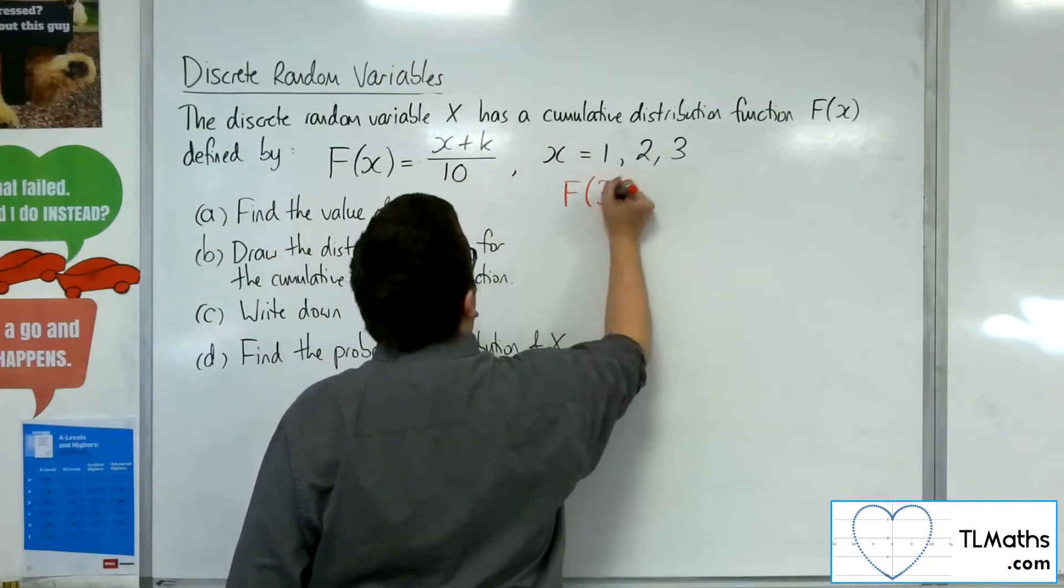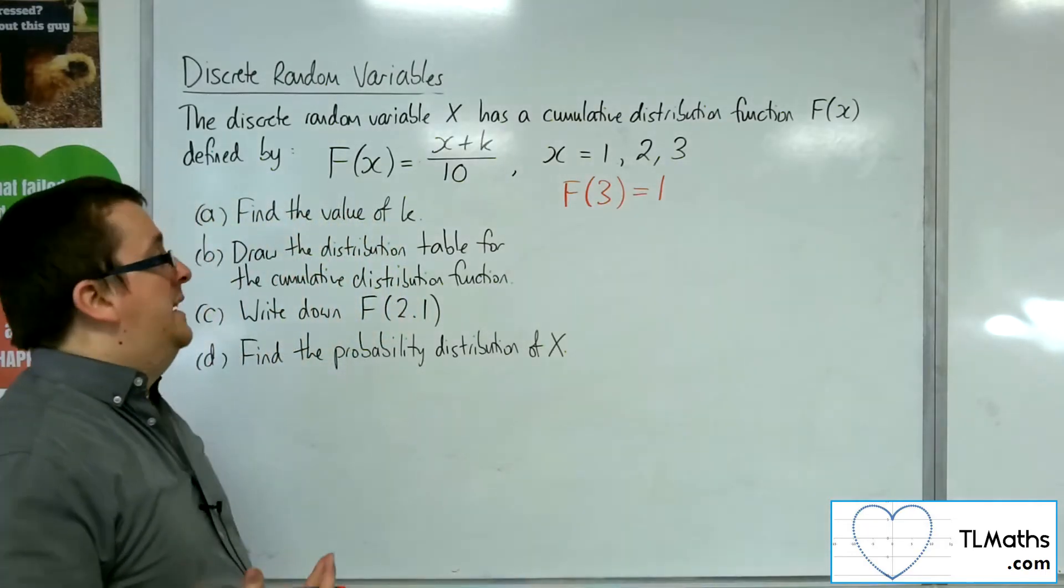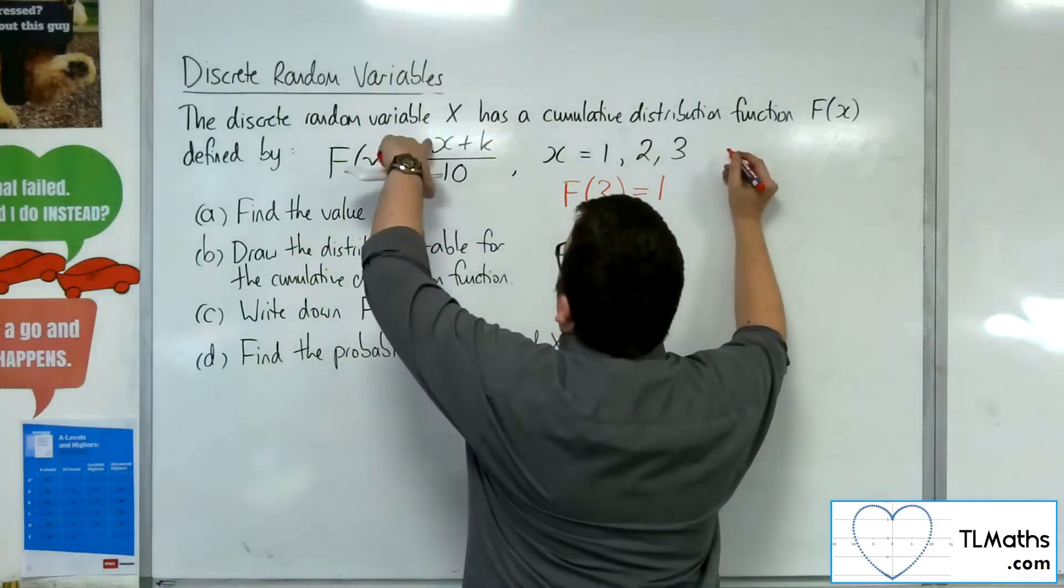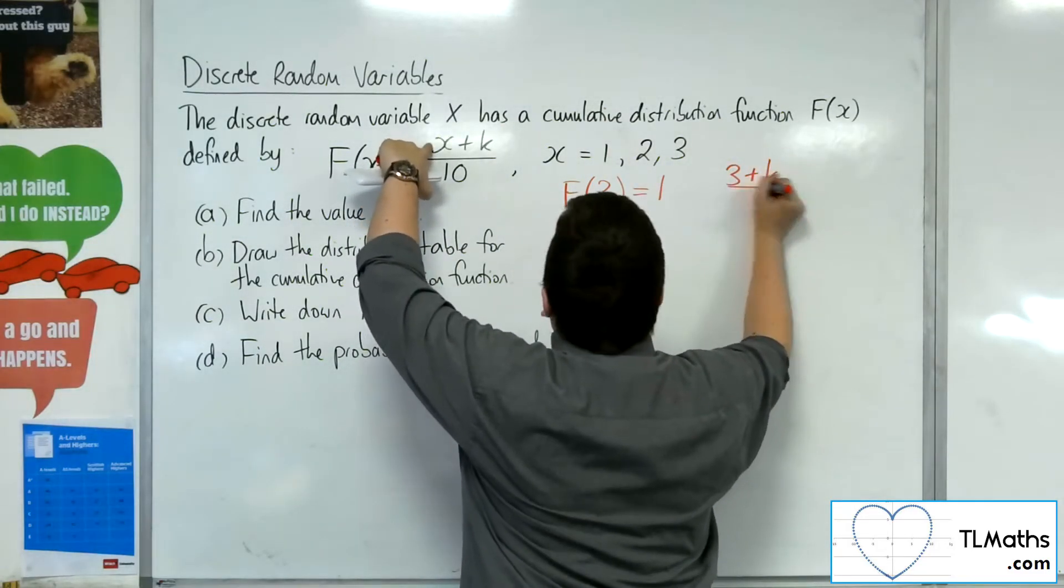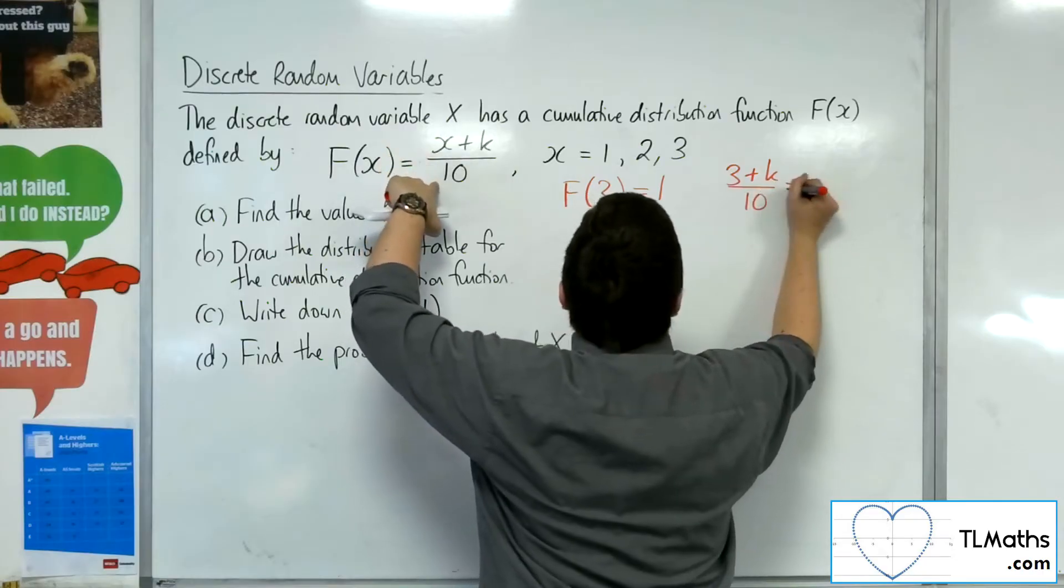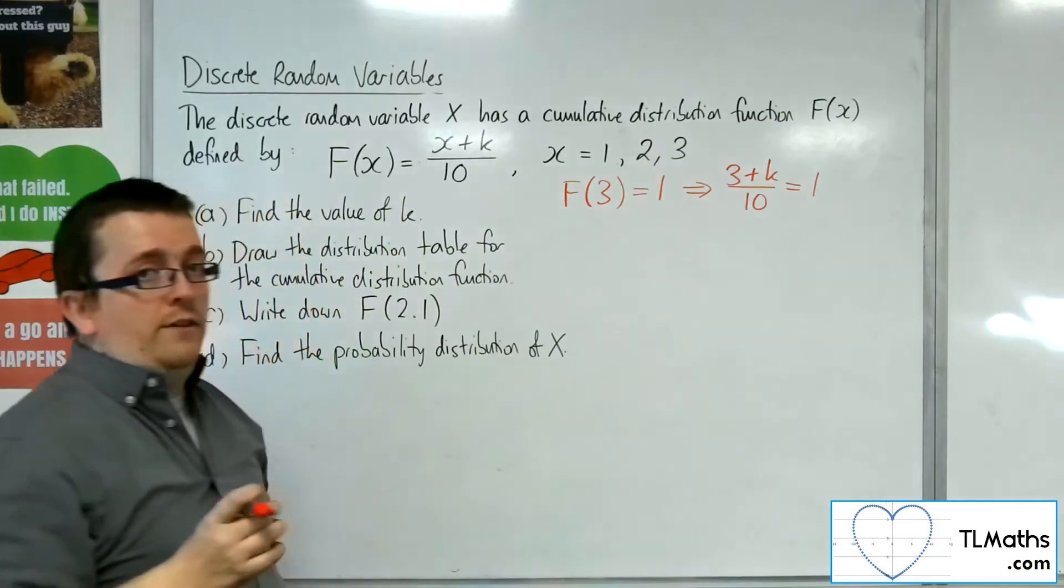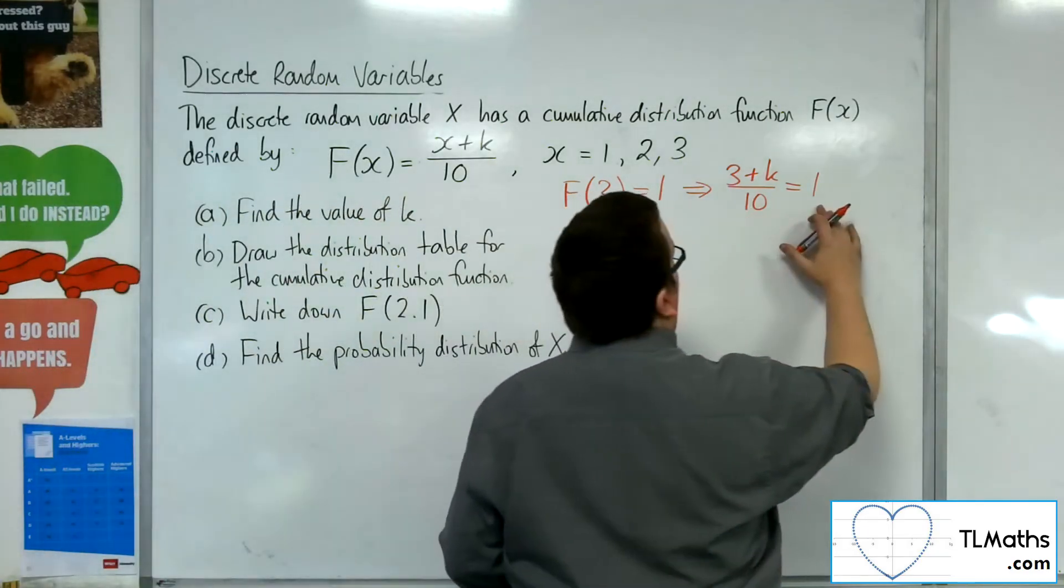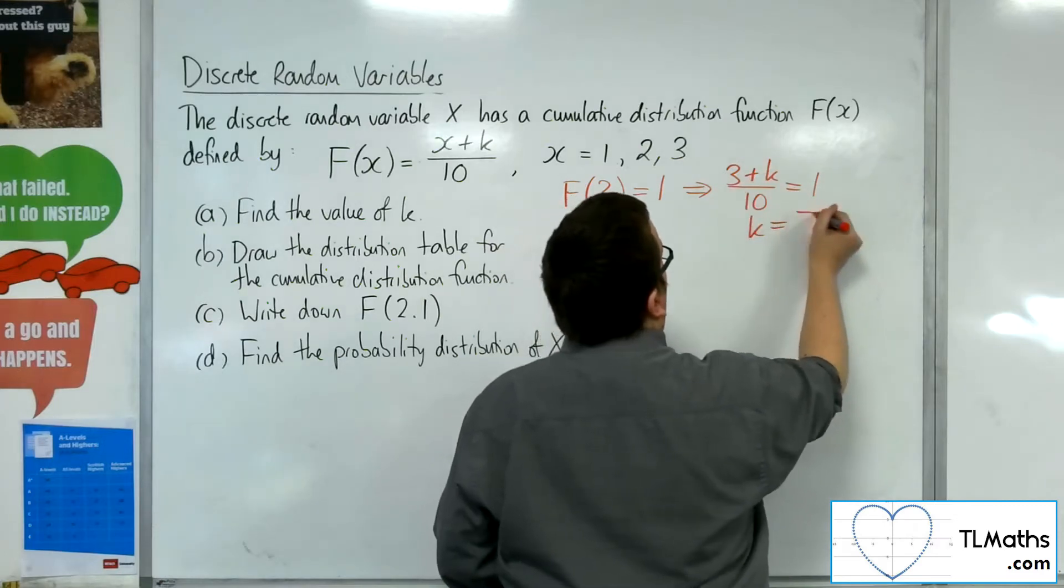f of 3 must be 1 because by that point all the probabilities have been added together. So that means that 3 plus k over 10 must equal 1. That is what we can read directly from the information we have. We can multiply both sides by 10, take 3 from both sides, and so k would have to be 7.